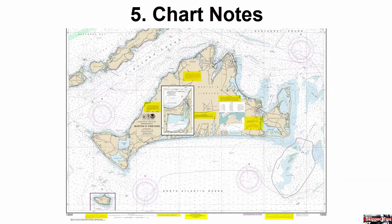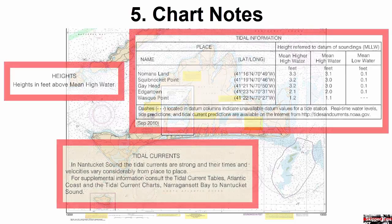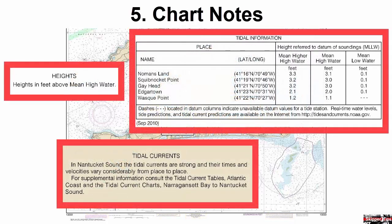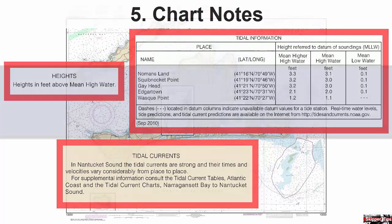Chart notes may be found in the white margins or printed onto the non-navigable land portions of your chart. Scan the notes for height data, tidal information, dangers, and warnings. On this chart, heights are in feet above mean high water. Tides in the area show ranges just over 3 feet, and you may encounter strong currents when navigating in Nantucket Sound. Use this information to make safer passages.